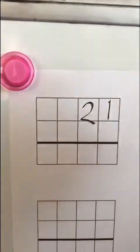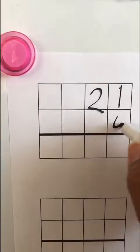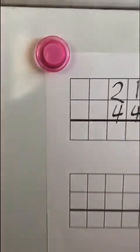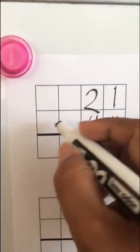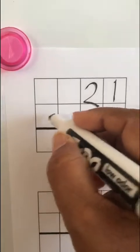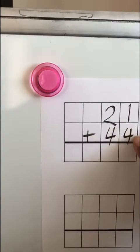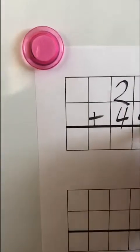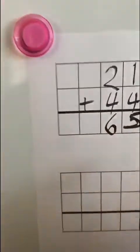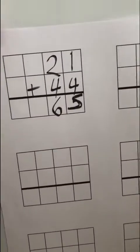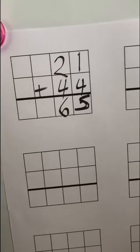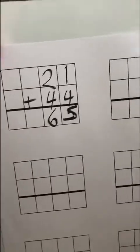So, we are going to add 1 plus 4, which will give us 5. And 2 plus 4 will give us 6. So, our answer is 65. We did not have to carry. We did not have to do anything. Just add the two numbers together.